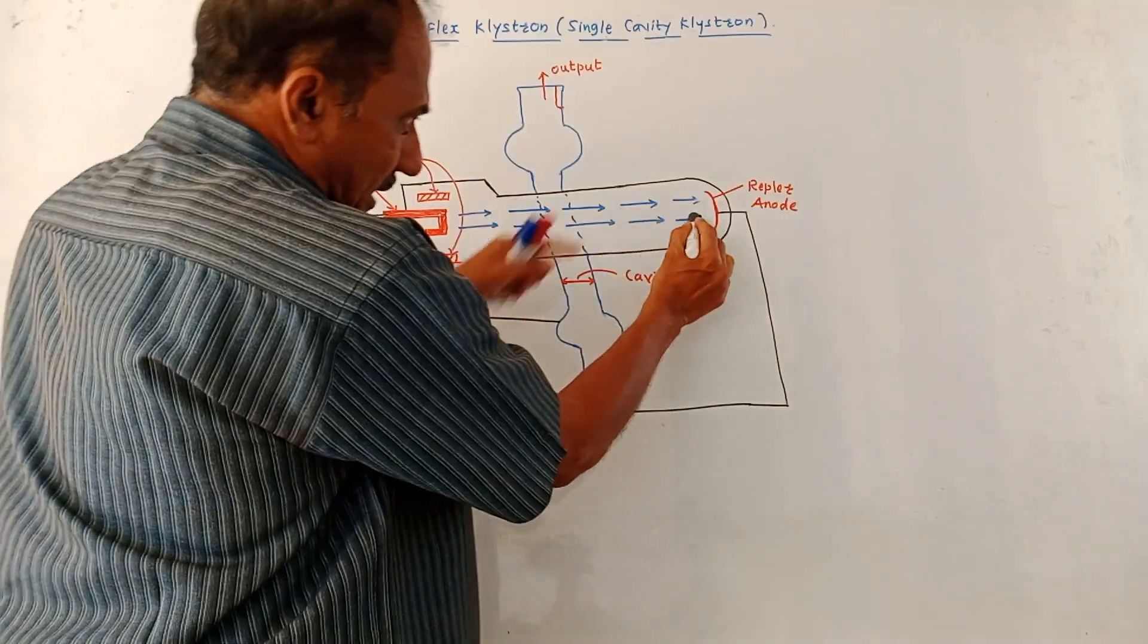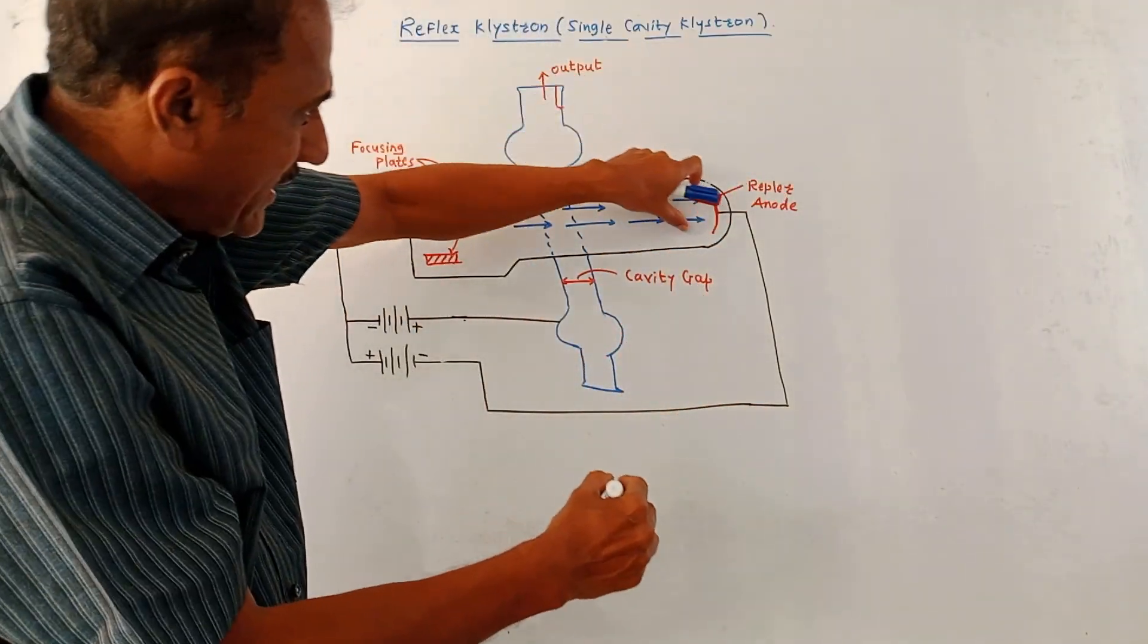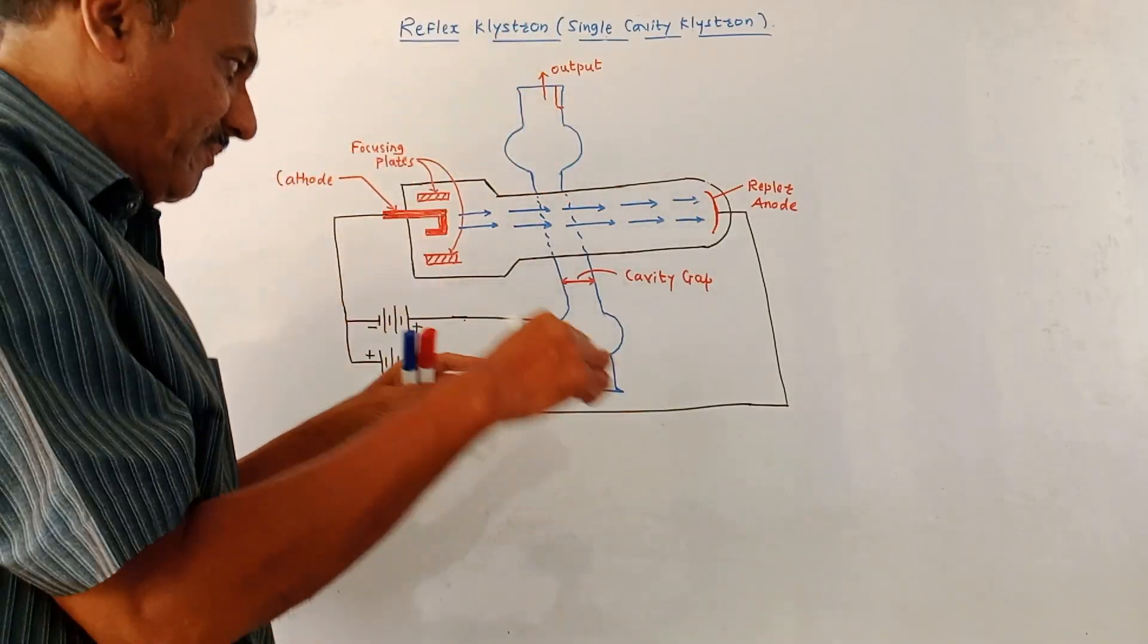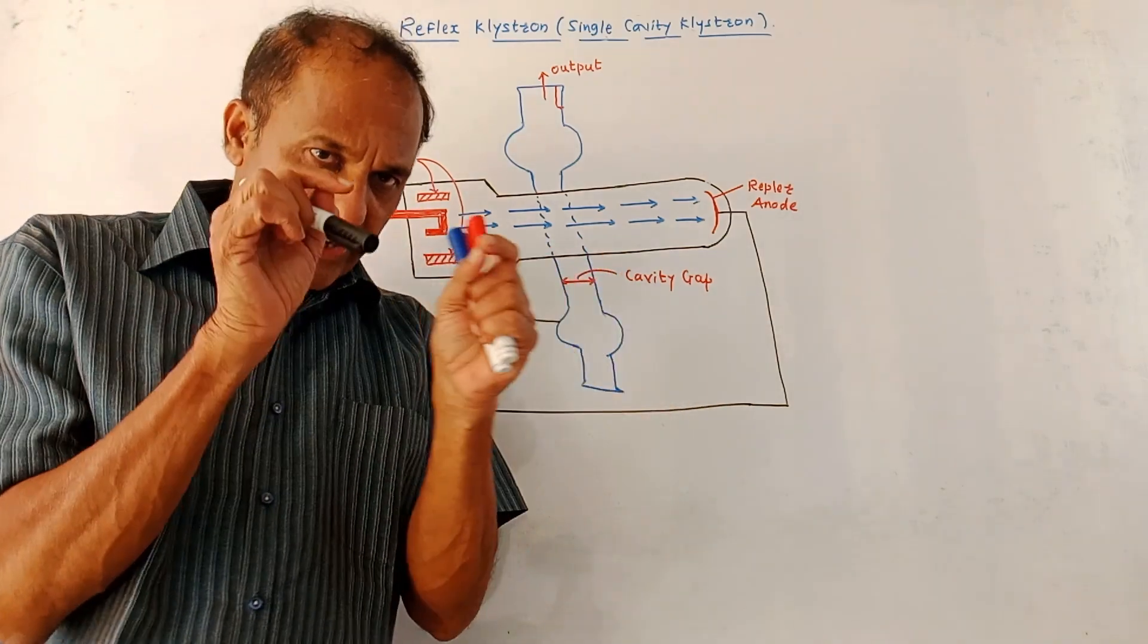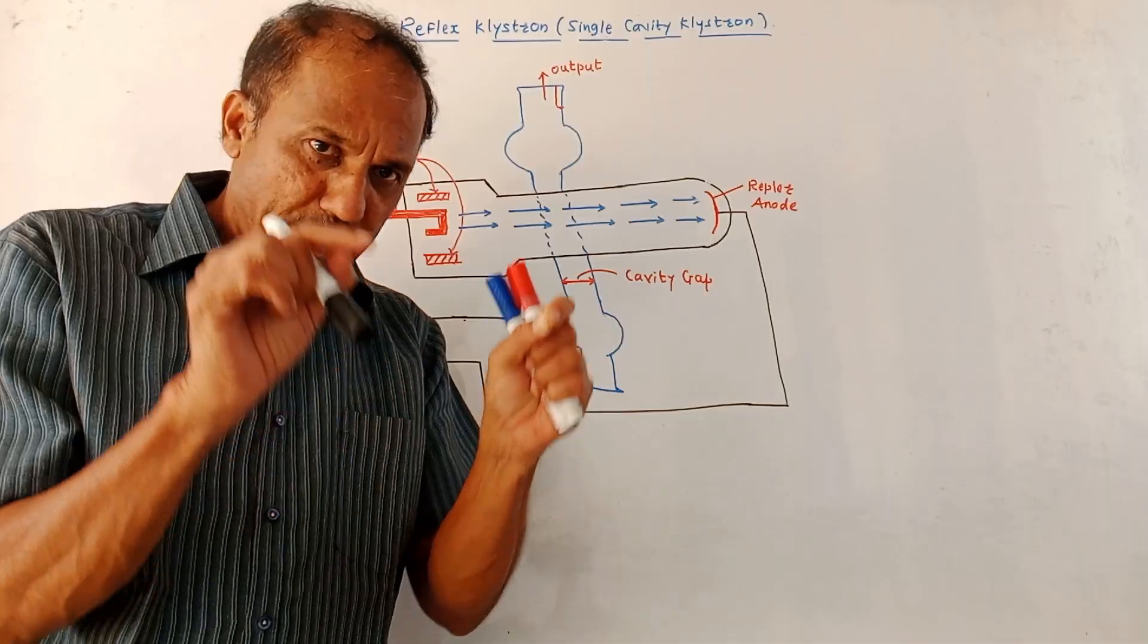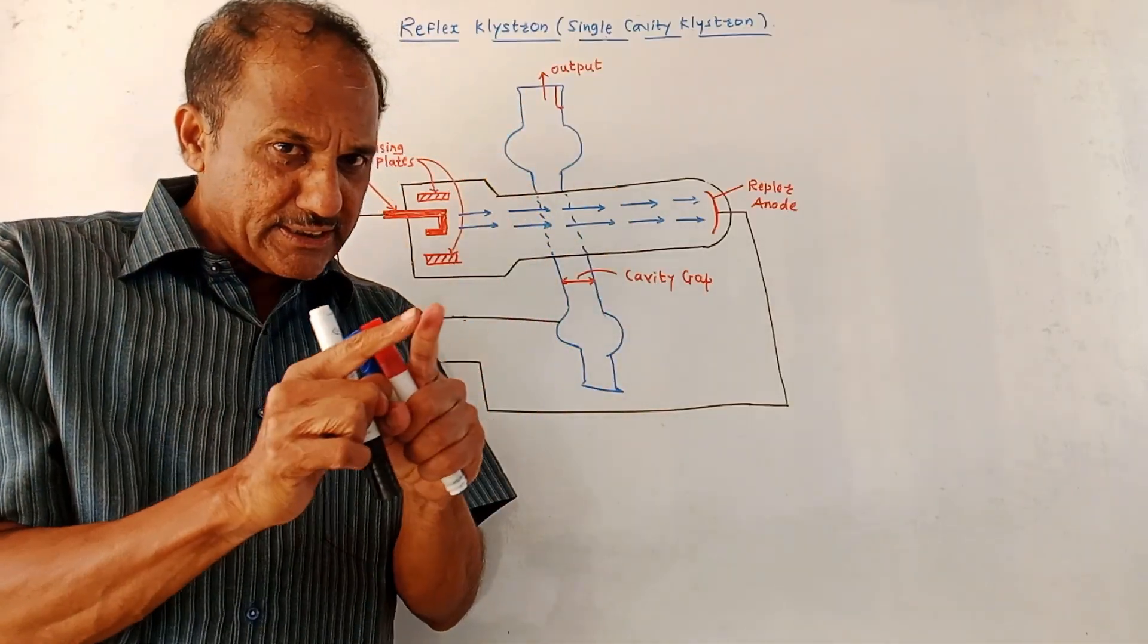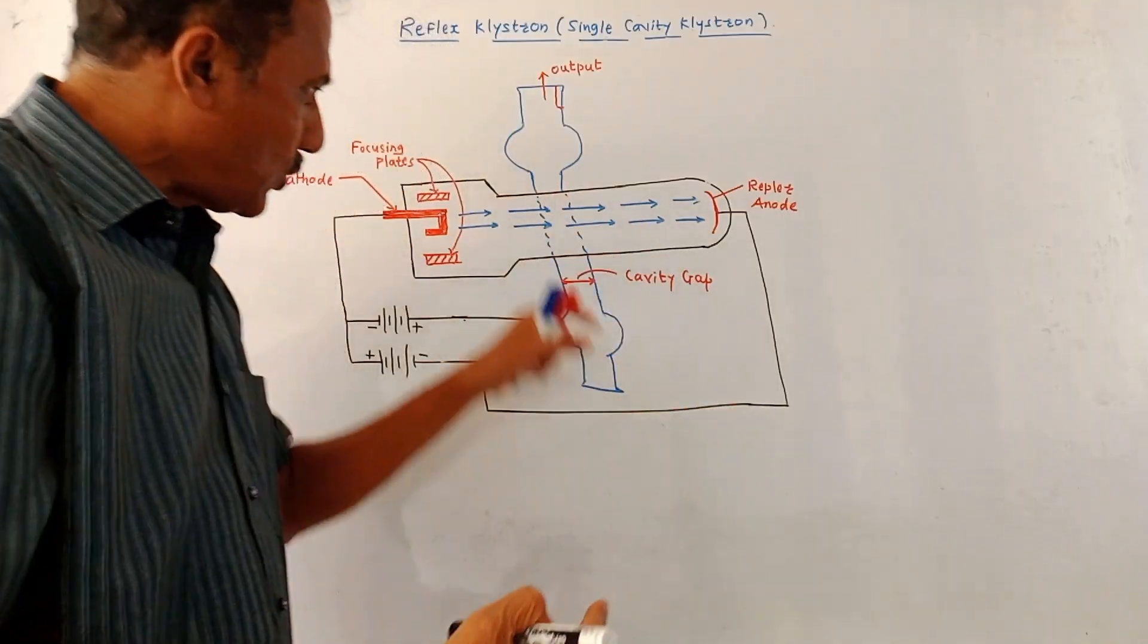In that case, electrons will reach the repeller anode, which will reflect these electrons and they will come back into this space. Now let us consider that some electrons are passing through this cavity when the cavity gap voltage is slightly positive. Since the gap voltage is slightly positive, certain acceleration will be provided to these electrons.